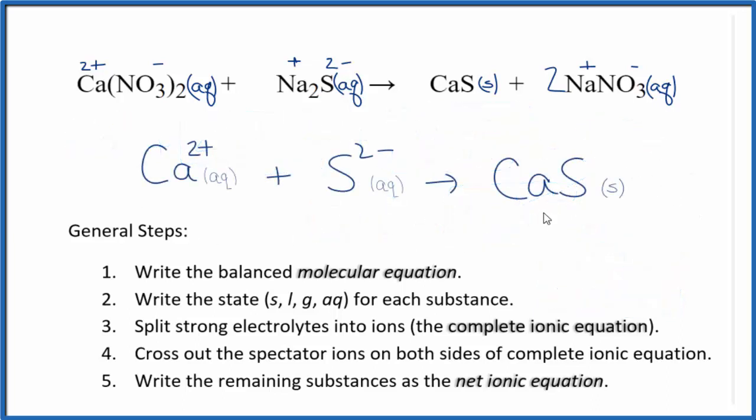And this is the balanced net ionic equation for calcium nitrate plus sodium sulfate. You'll note that charge is conserved. We have a 2 plus and a 2 minus, that adds up to zero, net charge of zero. Over here, the net charge is zero as well. If you count the atoms up, they're balanced too. This is Dr. V with the balanced net ionic equation for calcium nitrate plus sodium sulfate. Thanks for watchin'.